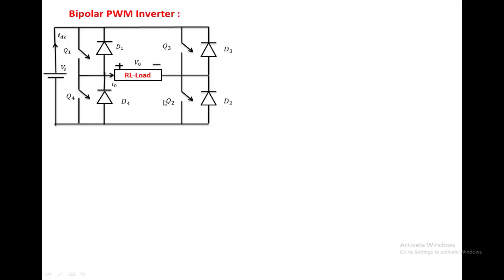If Q1 and Q2 are on, the output voltage becomes positive. If Q3 and Q4 are on, the output voltage becomes negative. But during the positive cycle of the input, the load is subjected to both positive voltage and negative voltage. That's why we call it a bipolar PWM inverter.